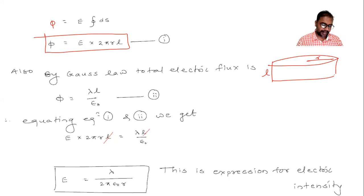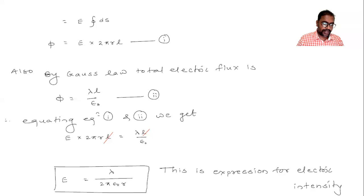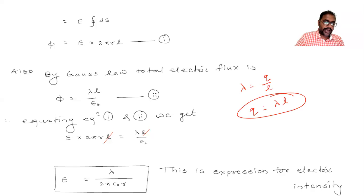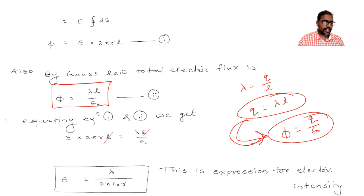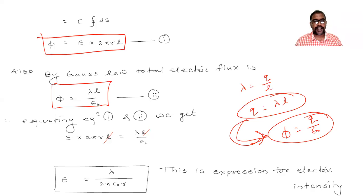By Gauss's law, electric flux equals q by epsilon zero. Since lambda is charge per unit length, the charge enclosed is lambda times l. Substituting, electric flux equals lambda l by epsilon zero. This is equation number two.